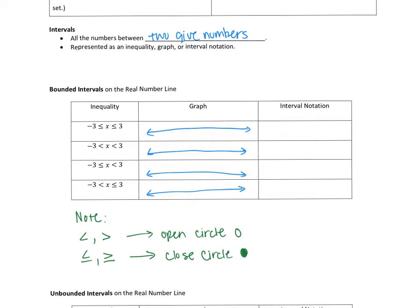Let's do number one. The first thing I do when I graph is draw the number line. Then I take the numbers given in the inequality — I have negative three and three, so I'm going to plot them. Remember, the left side of the number line always points to negative infinity and the right side points to positive infinity. You must do it in that order. So negative three goes further to the left, and positive three goes further to the right.